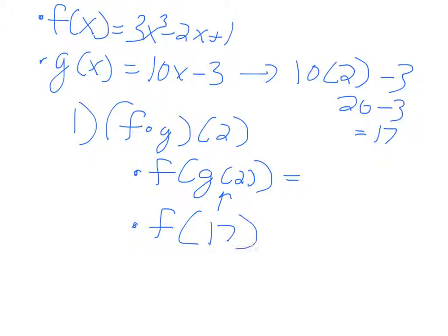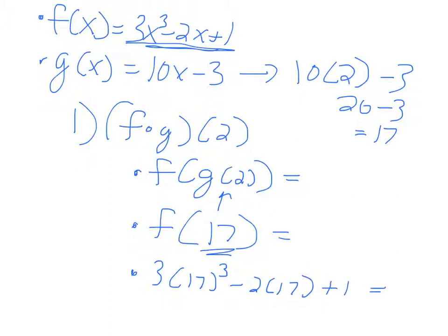Now plug in 17, going to the next line: f of 17. Every time you see an x in f of x, plug in 17. So you get 3 times 17 to the third, minus 2 times 17, plus 1. You can use a calculator — it's going to be a pretty big number. This works out to be 14,706. So that's the first part of solving composite functions — actually evaluating f of g of x.